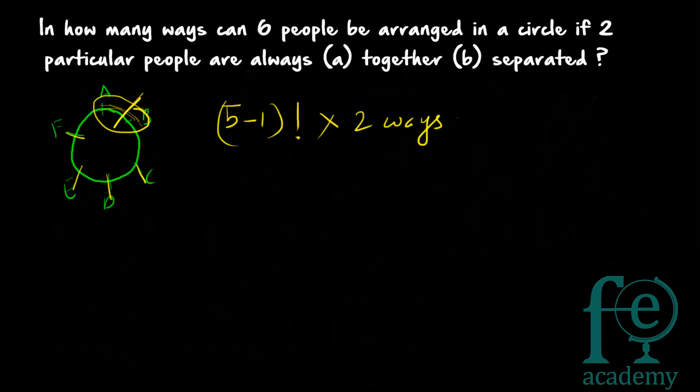So the total number of ways when 2 people are always together is (5−1)! × 2 = 4! × 2 = 24 × 2 = 48 ways.